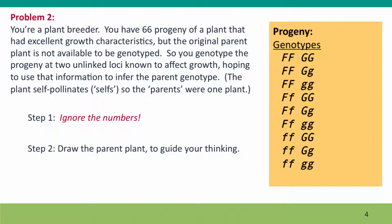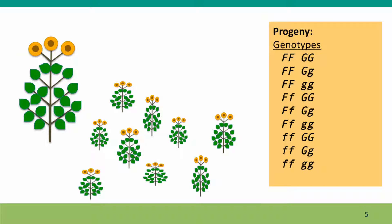In solving genetics problems, drawing a picture is always a good idea. So let's draw a picture of the plant. Here's the plant. Here are some progeny — these are the genotypes of the different progeny, and they grow to different degrees. Some of them are shorter and fatter, some of them are taller and skinnier. And there's the parent — these all grew from seeds on this parent. We want to know the genotype of this plant. Drawing a picture doesn't get you to the answer, but it makes it easier to think about how to get to the answer.